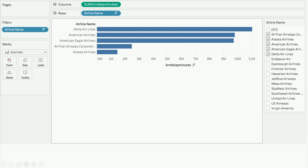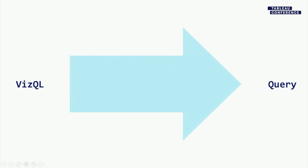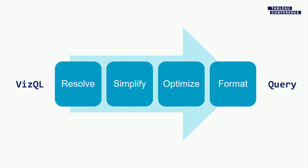So how does a visualization become a query? Here's that viz, and here's that SQL statement — somehow we got there. VizQL is the key intellectual property at the foundation of Tableau. It's a description of the pills, whether they're aggregated or not, whether they're sorted, what fields are being emitted, and so on. We go from VizQL to SQL using what we call the query pipeline in four steps: resolve the VizQL to an initial logical query, simplify it, optimize it, and then format it — meaning generate SQL appropriate for the data sources involved.